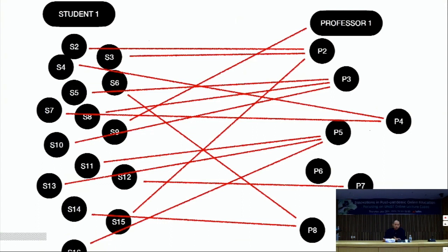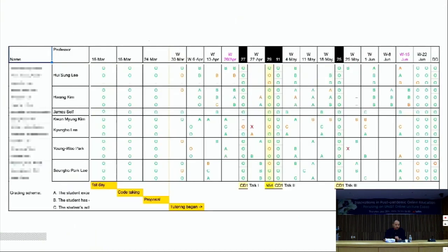The professors read all the proposals and prioritized them in terms of how well they think they can tutor each student based on their expertise. Most professors and students were paired within their second priorities. Including myself, we promised our students we would make ourselves available at least every second week for individual tutoring. Most of us met each tutoring student once a week or more.